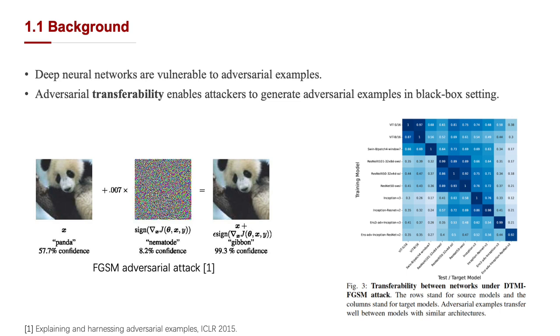In this setting, adversarial examples are typically generated through transfer-based methods. For example, attacking an ensemble of source models and hoping that the same adversarial examples are able to fool the unknown test model.